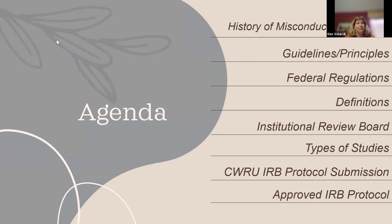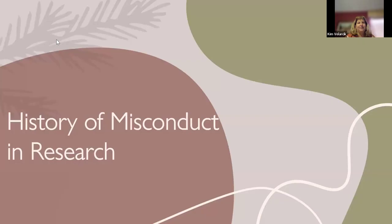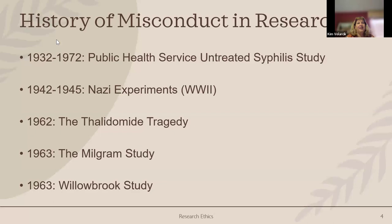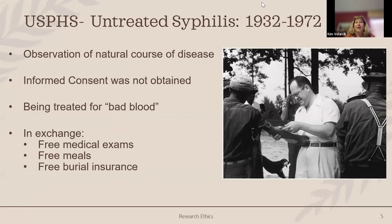Then we'll do a brief outline of protocol submissions and post-approval responsibilities. As far as the history of research misconduct, there have unfortunately been multiple cases where individuals were either not told they were going to be in a research study, didn't have a chance to say yes or no, or were not properly consented. The big one is the public health study — funded by the federal government, starting in 1932.